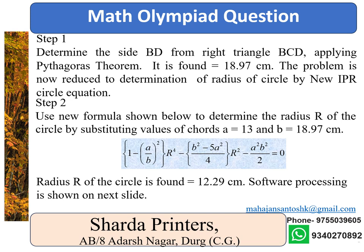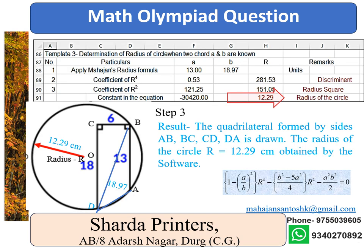Software processing is shown on the next slide. Step 3 — Result: The quadrilateral formed by sides AB, BC, CD, DA is drawn on the screen. The radius of the circle R is equal to 12.29 cm. The diagonal BD of the quadrilateral is equal to 18.97 cm, found by the Pythagorean theorem.